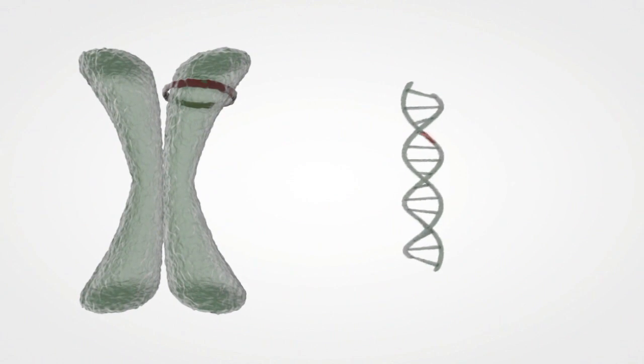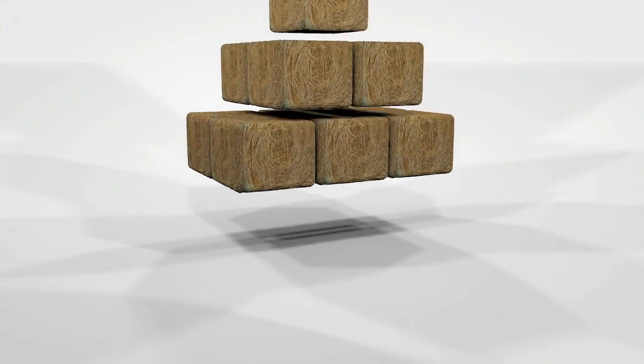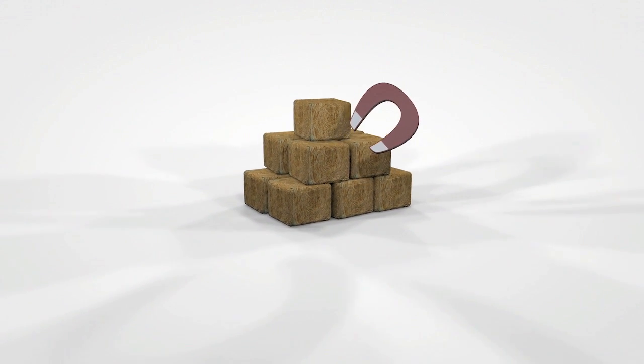Assays developed to detect oncogenic mutations need to be able to identify just a few mutant cells in a huge abundance of wild-type cells. Finding a needle in a haystack requires an assay that delivers both high signal-to-noise and low false-positive and false-negative rates.